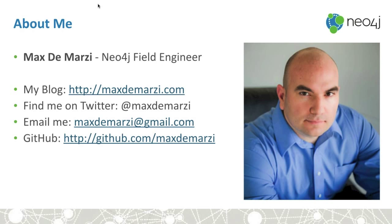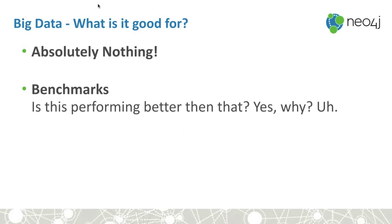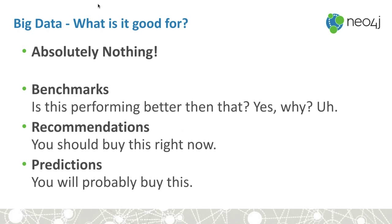So the world has been collecting all this data — we have this nickname for it, big data. And what is it good for? Usually, absolutely nothing unless you have a plan of what to do with it. What we have seen people do with it is benchmarking — trying to figure out which things perform better and why. Also recommendations, the idea that a current user should buy this thing right now. And lastly, predictions — taking a look at your user base and seeing what we think they're going to do. Today we're going to talk about recommendations and what you can use to build your recommendation engine with Neo4j.